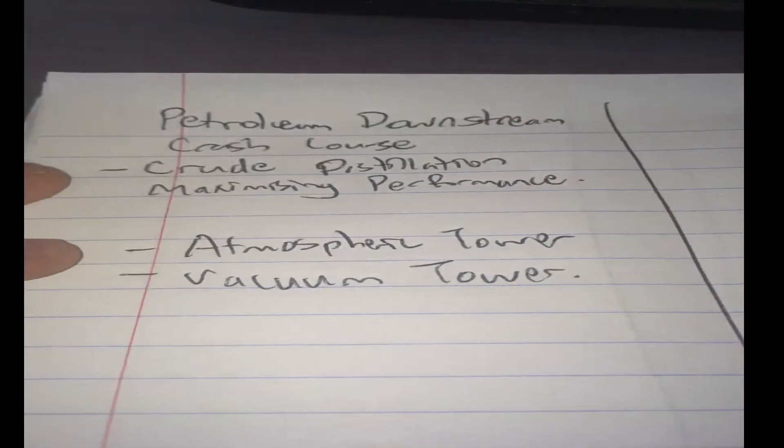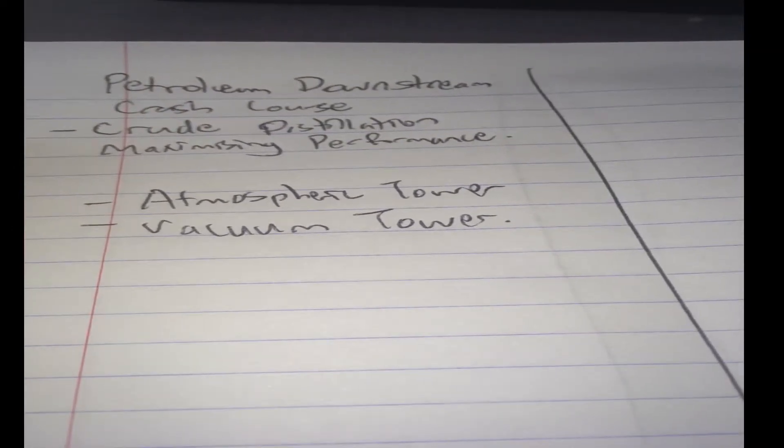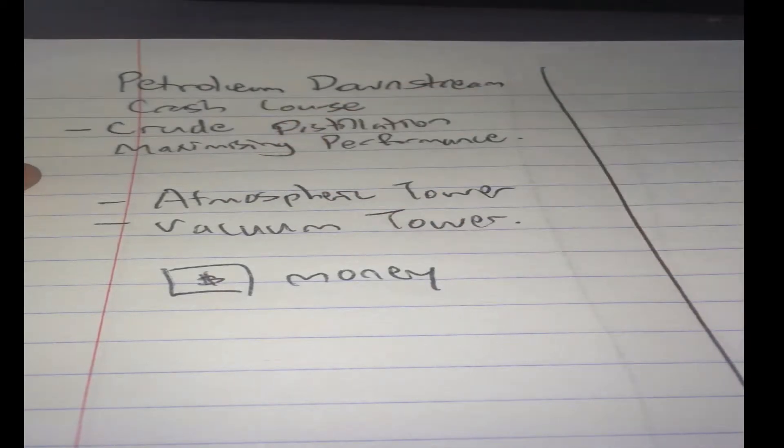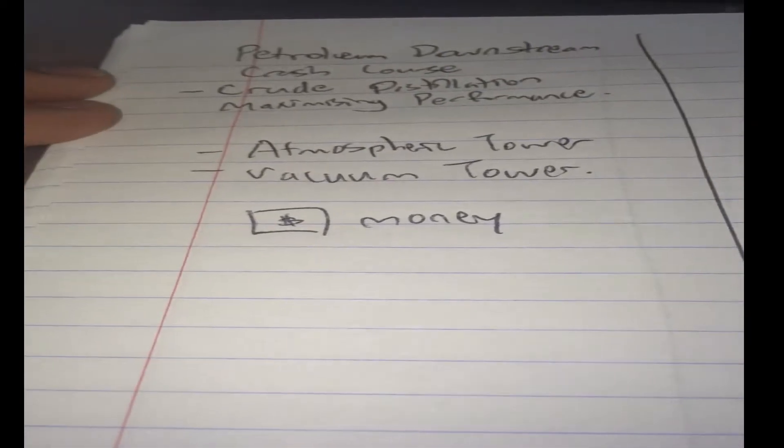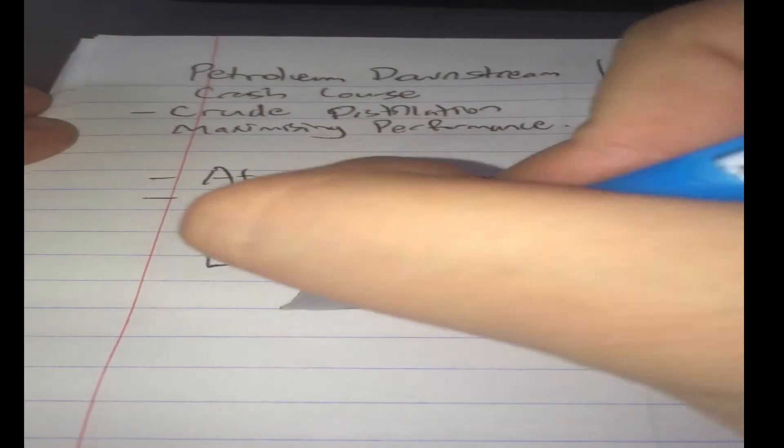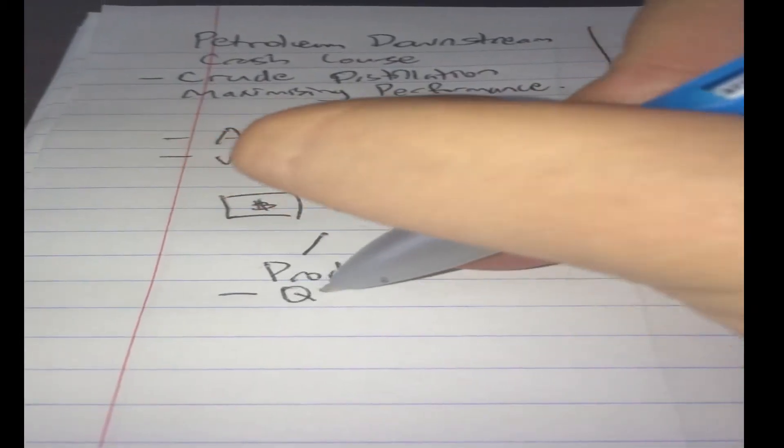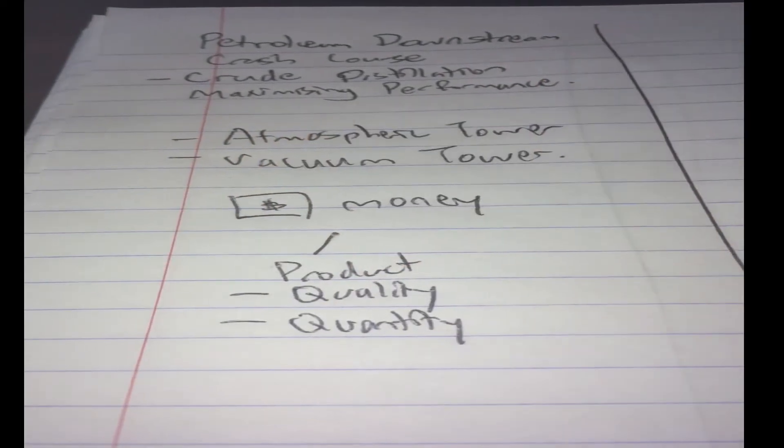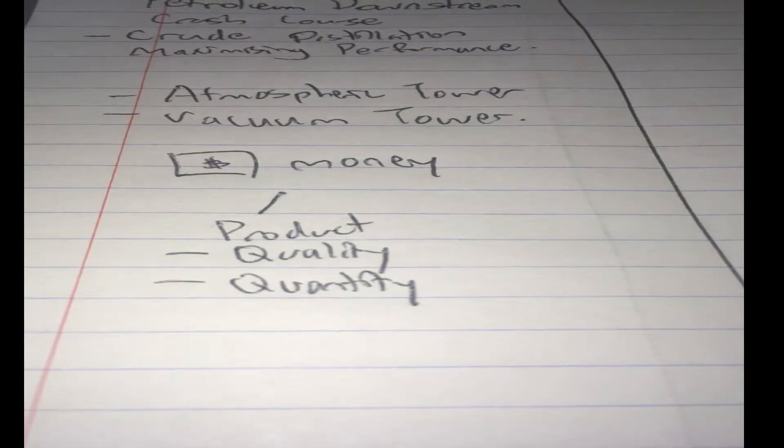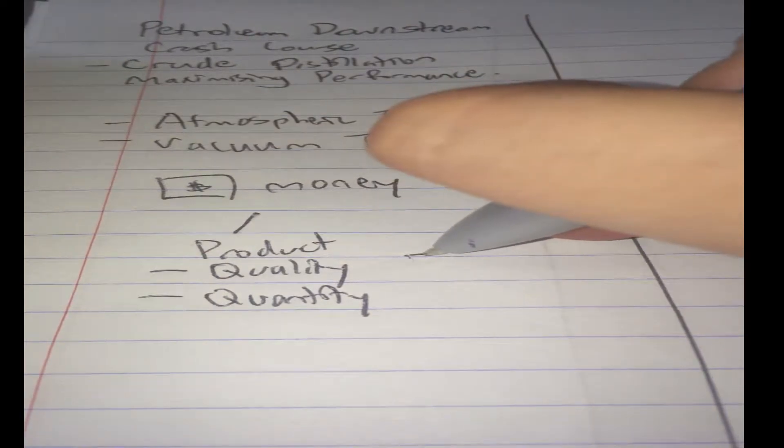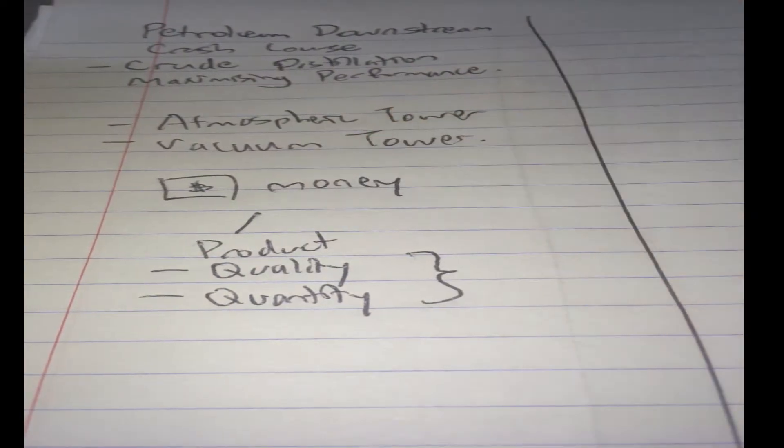Now, what's the point of learning how these two towers operate? As we know, our end result is to make money. Money is the objective of the refinery. And how do we actually make the most amount of money? We need to control the product quality and quantity.